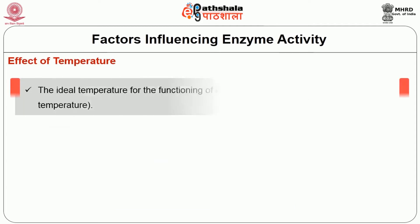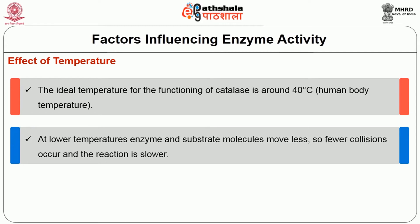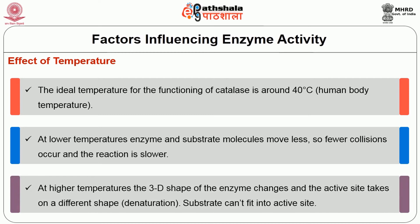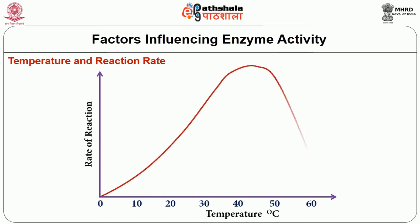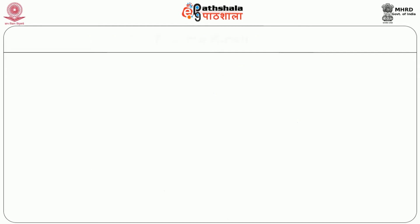Effect of temperature: The ideal temperature for enzyme catalysis is around 40°C, close to human body temperature. At lower temperatures, enzyme and substrate molecules move very little, fewer collisions occur, and the reaction is very slow. At temperatures above the optimum, the 3D shape of the enzyme changes — the active site takes on a different shape, commonly called denaturation — and the substrate can no longer fit. The effect of temperature on reaction rate is described by a bell-shaped curve, with an optimum temperature for maximum enzyme activity.